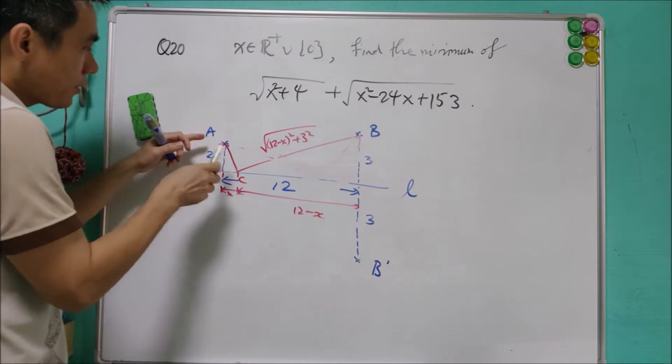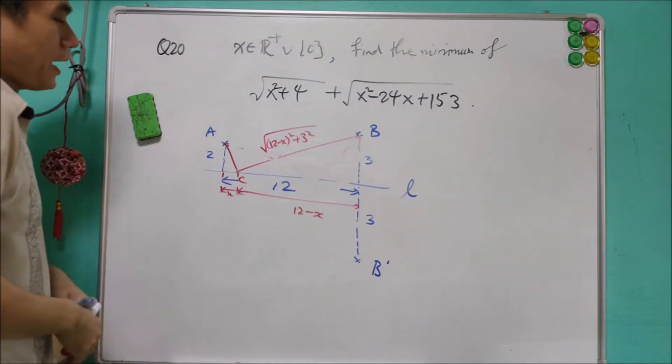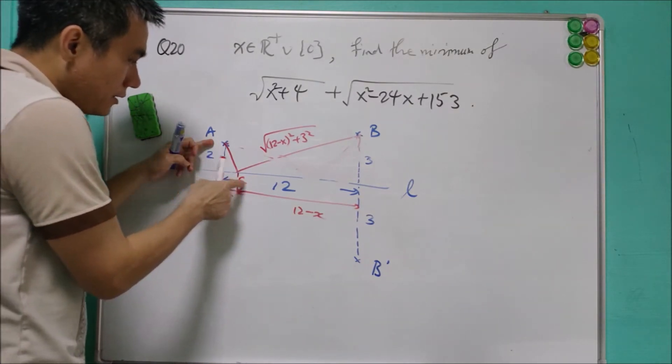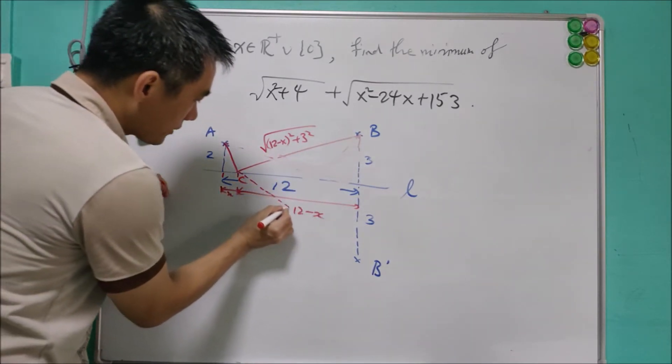Call this point C. If I go from A to C to B, the distance will be exactly the same as from A to C, then from C to B prime instead of to B. Because it is symmetric.